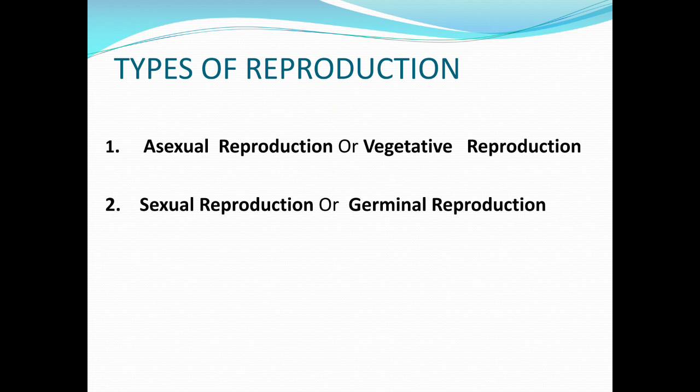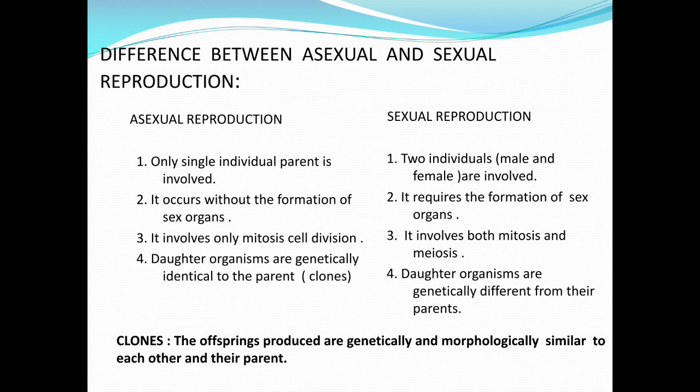The second type of reproduction is sexual reproduction, which is also known as germinal reproduction. In this type of reproduction, the reproductive parts of the individual are involved, and we can see the participation of gametes. So the two types of reproduction are asexual reproduction and sexual reproduction. Now let us see the differences between asexual and sexual reproduction.